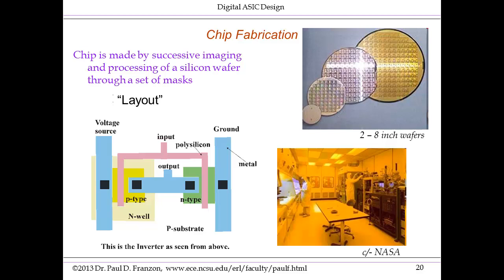So here we have a layout with several masks involved, and those masks are successively printed with the appropriate implants, metals, and other materials in a fabrication facility to create a silicon chip. The distinction is that the previous two design styles — full custom and standard cell — require a full set of masks, even though in the standard cell design the information source is a defined set of usually 30 to 100 standard cells.